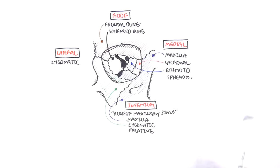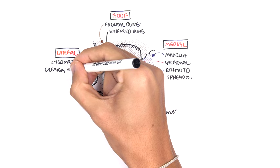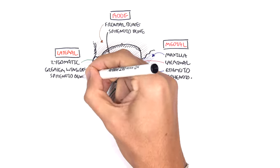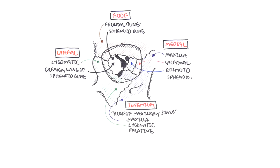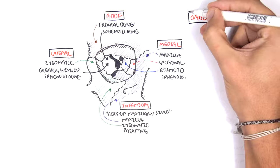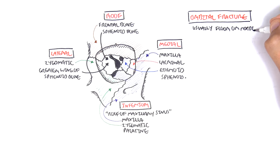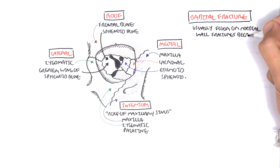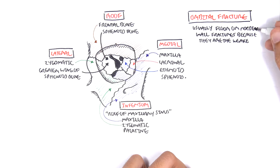The lateral border is made up of the zygomatic bone and the greater wing of the sphenoid bone. These boundaries are significant because an orbital fracture can have some serious consequences. Orbital fractures usually occur in the floor or the medial walls because they are the weakest.